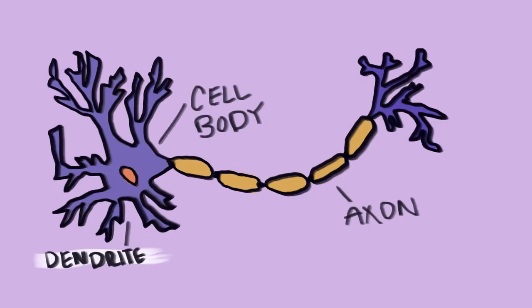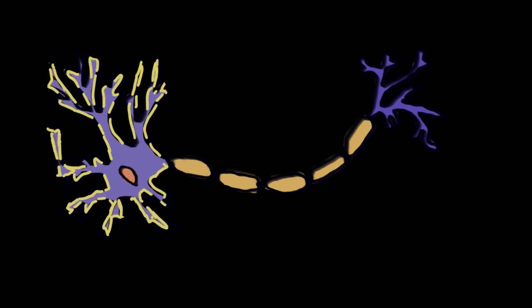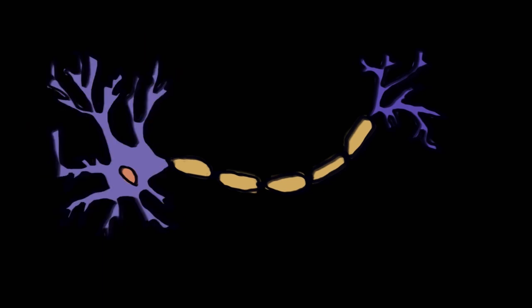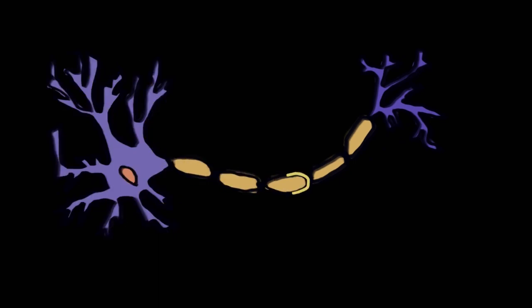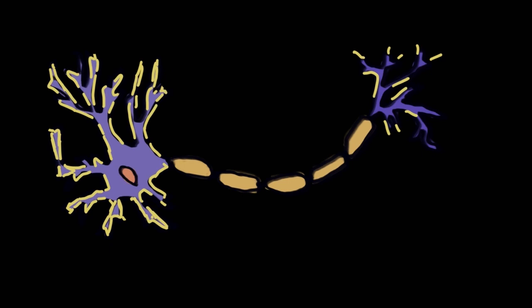A neuron is made up of three parts: the dendrites, the cell body, and the axon. The dendrites receive information or signals from other neurons that are connected to it. Then the cell body takes in all this information and processes it. Then, the axon sends an output signal to another neuron to continue the flow of information.